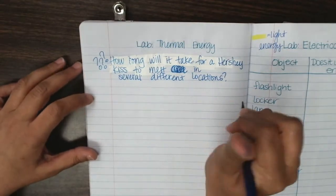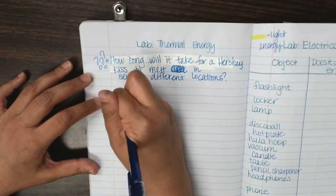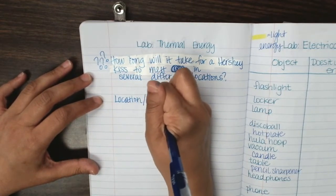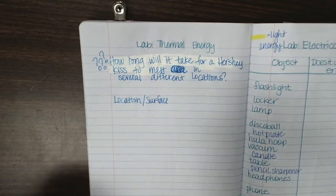So we're going to be experimenting on different surfaces. So here's what I'm thinking: location slash surface, I guess, because it's not so much like my hand being a location, like my surface is the hand.